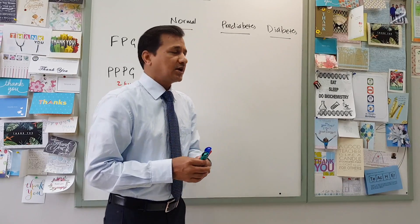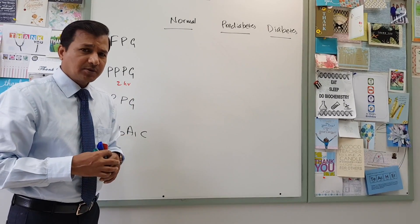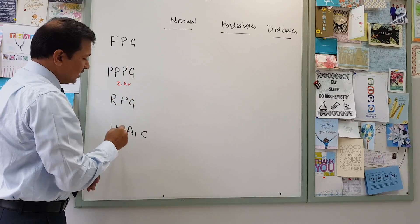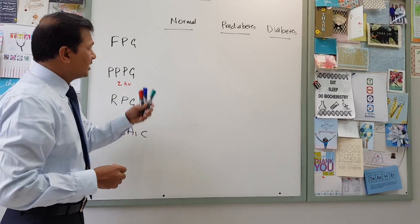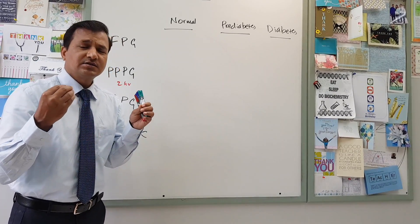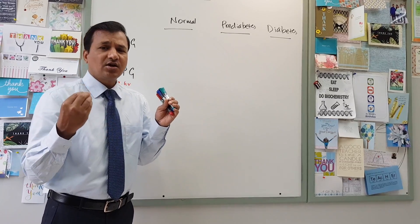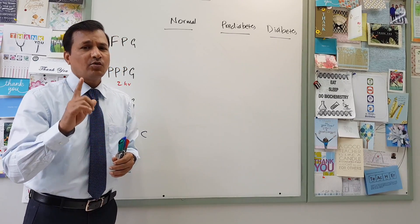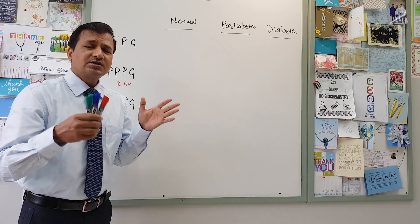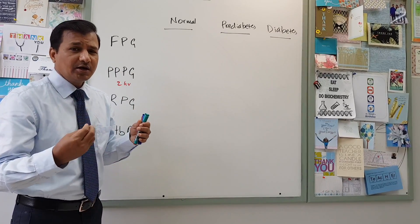First, let's get into the fasting plasma glucose. The different types of tests we do for diagnosing diabetes or pre-diabetes are: fasting plasma glucose, postprandial plasma glucose, random plasma glucose, and HbA1c which is glycated hemoglobin. Fasting plasma glucose is taken when a person has been in a fasting condition for at least 8 hours — meaning the person has not taken anything with calories, only water is allowed.